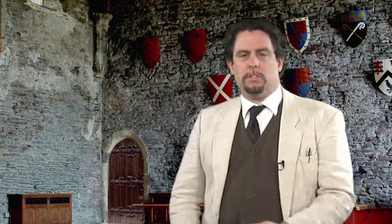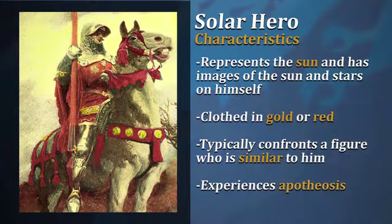As far as a solar hero goes, we'll look at some of the details within the poem to see what exactly fits that image. In essence, the solar hero is a character who represents the sun or carries solar imagery of some kind — stars and the sun itself. He is normally clothed in gold or red, and he normally confronts a figure who is similar to him in those colors and that attitude, before achieving the apotheosis that raises him to a level of divinity.